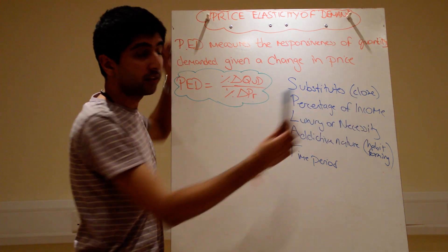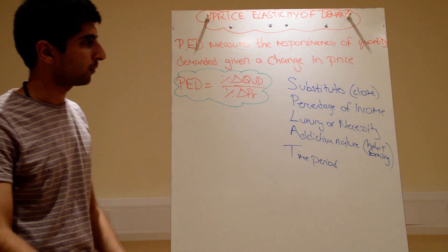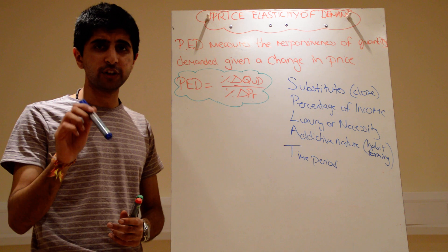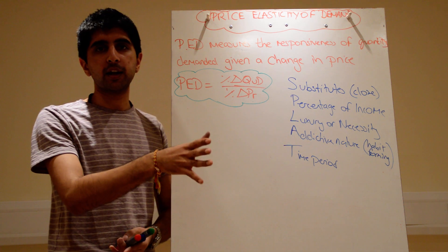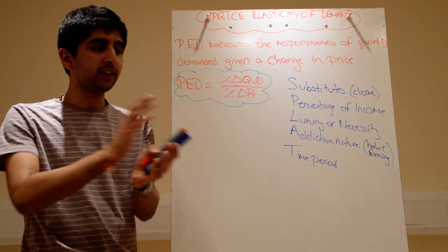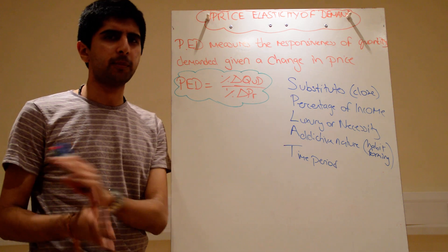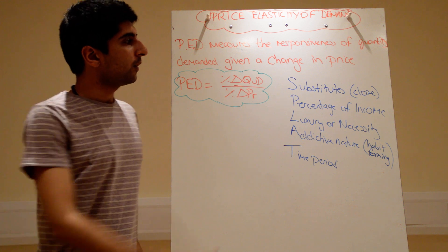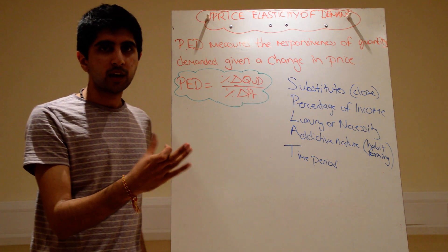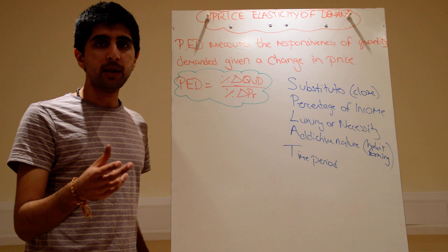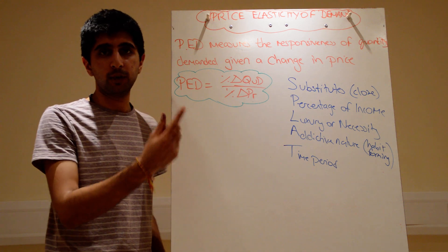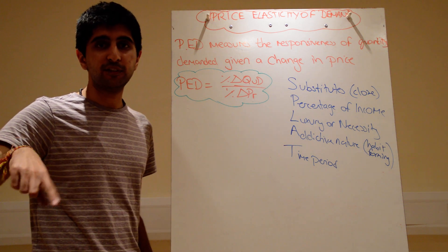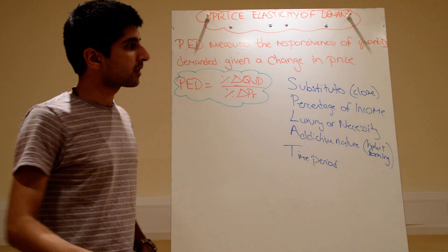The number of substitutes. The number of close substitutes. Take washing powder as a good example. You go to a supermarket, you go to the washing powder aisle, and you can see a huge variety of washing powders and they're all very close substitutes. So the more substitutes there are, the more elastic demand will be. Because the price of one goes up, you'll just buy another different brand of washing powder.